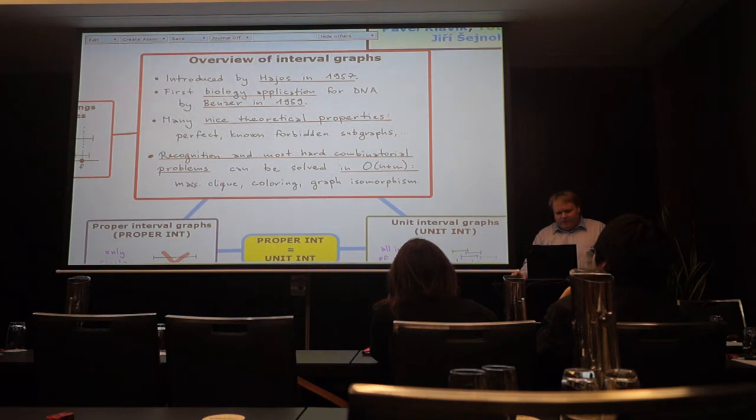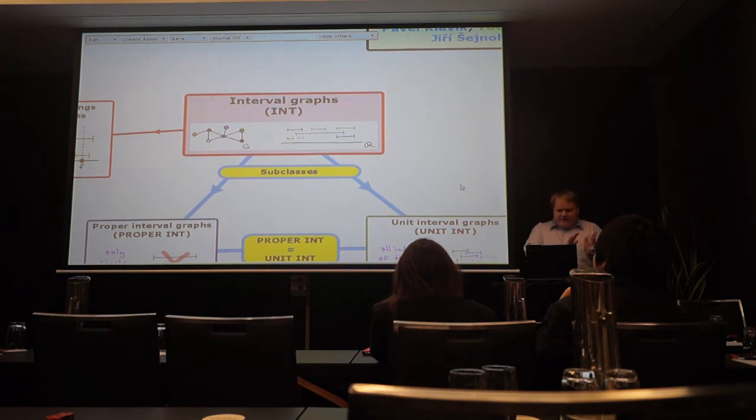And they include, for instance, clique, coloring, independence, a dominating set, graph isomorphism. Which is not provably hard, but solvably hard. We don't know how to solve it. So we can do it in linear time only in interval graphs. Okay, so these are interval graphs.